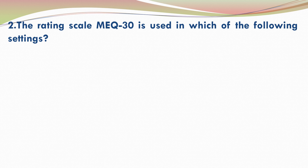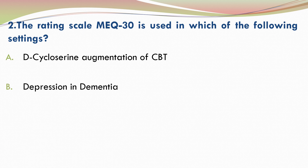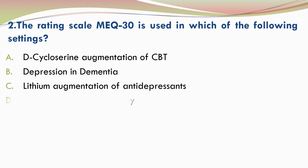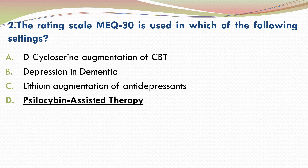Question 2. The rating scale MEQ30 is used in which of the following settings? Please go through the options and choose your answer. The correct answer is D — Psilocybin assisted therapy.